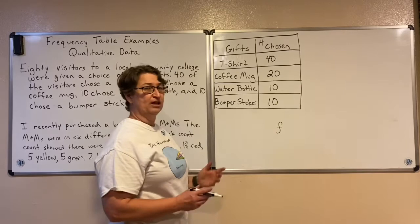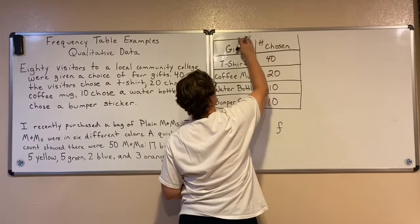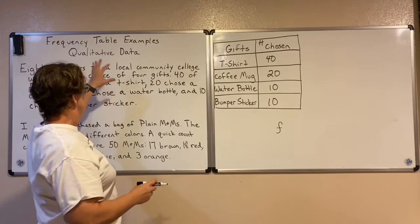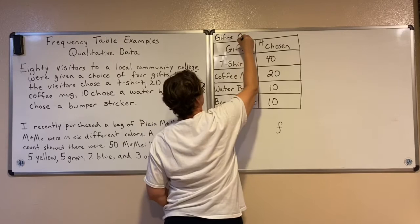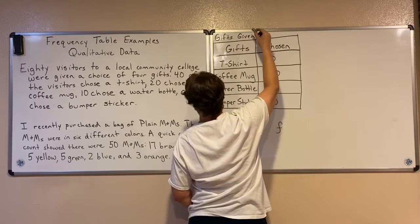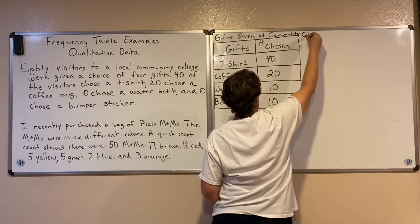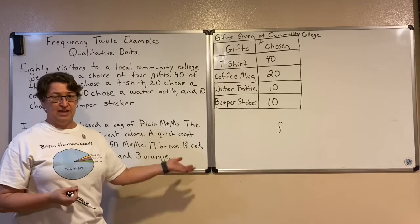Good displays must have labels and a title to let the reader know what is being displayed. The title here is 'Gifts Given at a Community College.' The 40 represents the word 't-shirt' written down 40 times; the 20 represents 'coffee mug' written 20 times; the 10s represent water bottles and bumper stickers. Now we can clearly read the data — that's a frequency table.